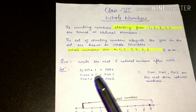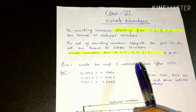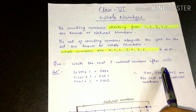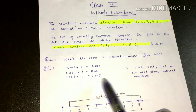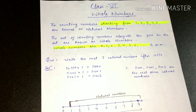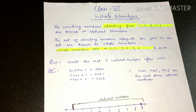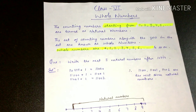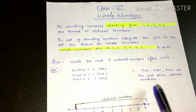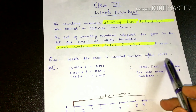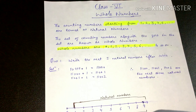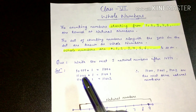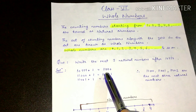Toh everything is clear? Okay, aage chalte hain. Question: write the next three natural numbers after 10999. As you know, all numbers except zero are natural numbers. So agar hain 10999 se next three natural numbers chahiye...